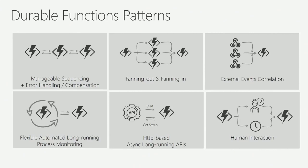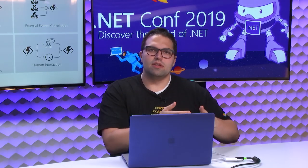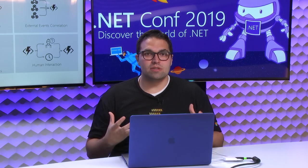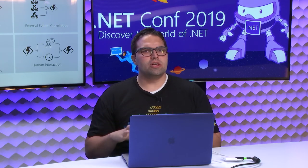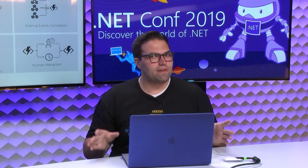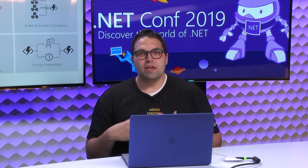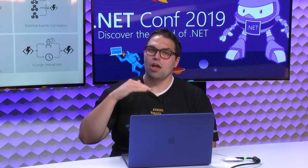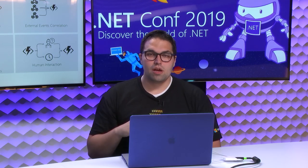Finally, human interaction — maybe I have an approval workflow where I submit a document and need to wait for Jeff to approve it and Seth to approve it. Once both have approved it, submit it to the final result. These are just a few of the patterns that are more stateful or long-running in nature. If you're using just serverless or Azure Functions out of the box, you might wonder how to solve these. Durable makes it really trivial, and in fact all of the patterns shown here have code samples in the durable function documentation, which I'll link to at the end.